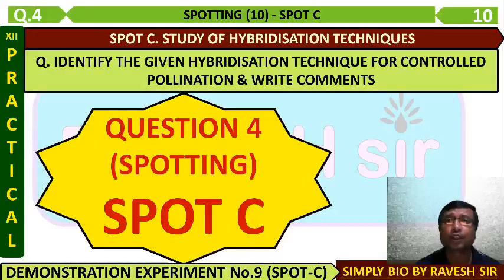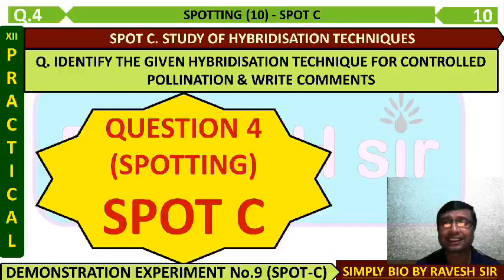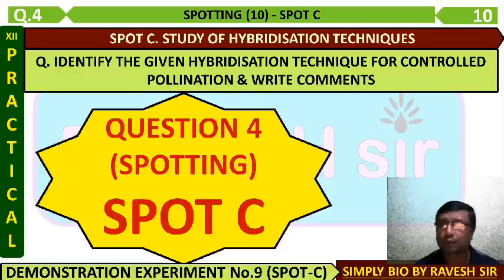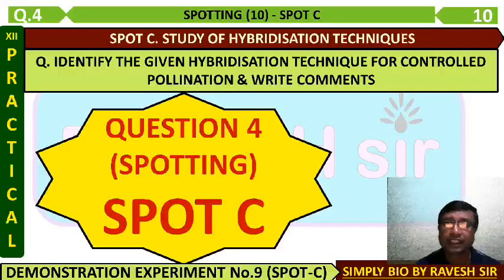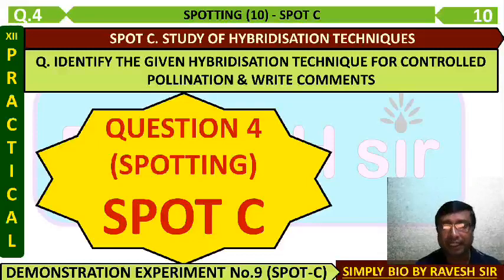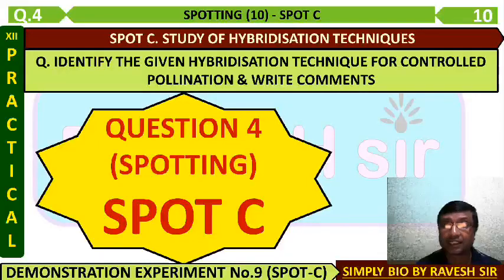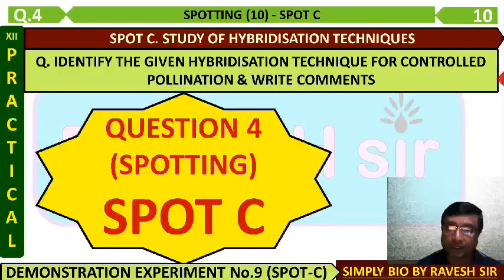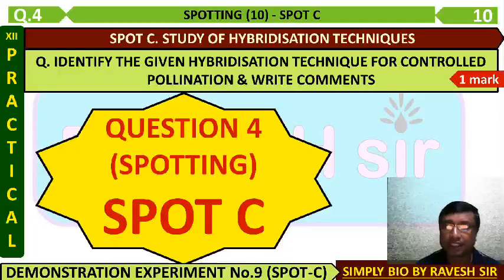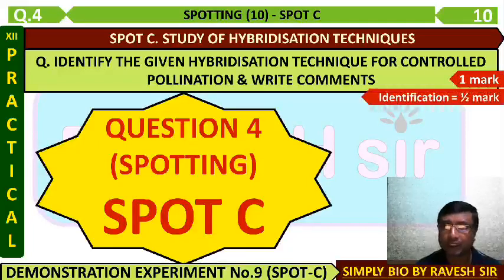For controlled pollination, write about this technique in brief. You can see four simple points, and these points will be given to you at the end of this session, which you have to read and mention in the practical notebook. You have to copy these into the practical notebook.